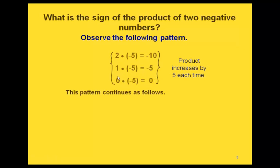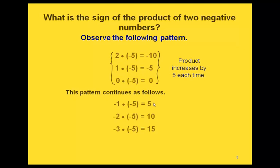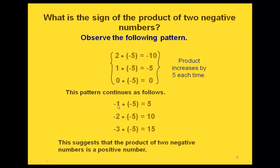Now if we continue the pattern, our first factor continues to go down by 1, giving us negative 1, negative 2, and negative 3. In each of these we're taking a negative number times a negative number. Our pattern, increasing by 5 each time, gives us positive 5, positive 10, and positive 15. So this tells us that multiplying two negative numbers gives a positive number.